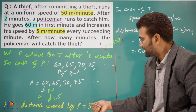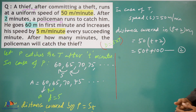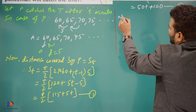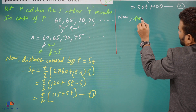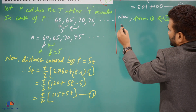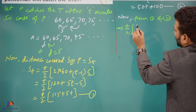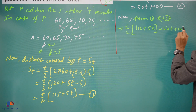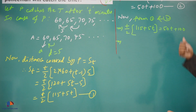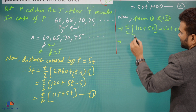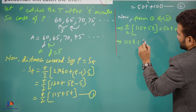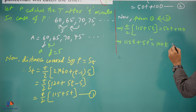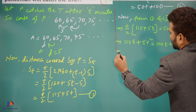According to the information, the policeman catches the thief after t minutes, so the distance covered by the policeman in t minutes equals the distance covered by the thief in (t + 2) minutes, meaning equation 1 equals equation 2. So we have (t/2) × (115 + 5t) = 50t + 100. Multiplying both sides by 2: 115t + 5t² = 100t + 200.